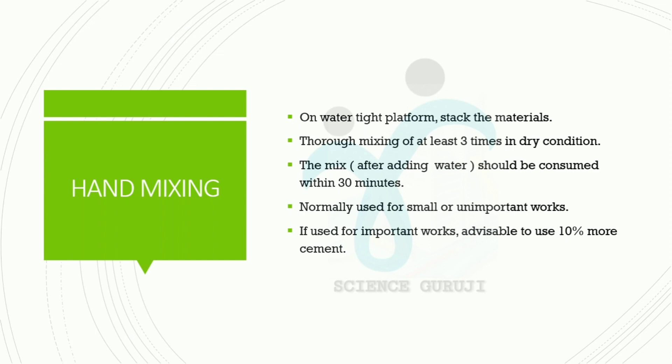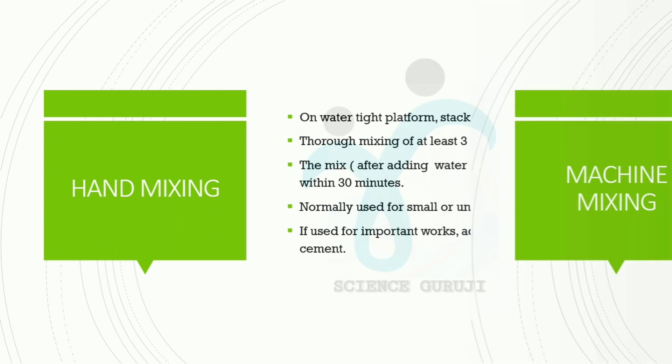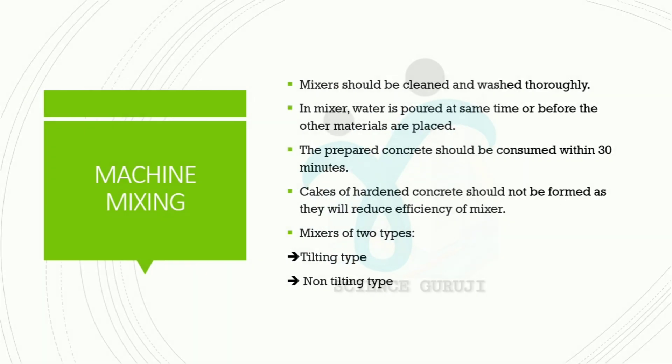Hand mixing can be used for small or unimportant works. If used for important works, it is advisable to use 10% more cement. For machine mixing, the mixer should be cleaned and washed thoroughly before using. In the mixer, water is poured at the same time or before other materials are placed. The prepared concrete should be consumed within 30 minutes.